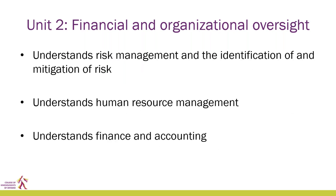Moving on to Unit 2 — financial and organizational oversight — council and committee members are expected to understand the concept of risk management and commit to identification and mitigation of organizational risk. They're expected to understand processes for managing people, understand finance and accounting, reporting concepts and terminology, how to interpret financial statements, and the role of council management and the auditor in financial reporting. They should be able to read, interpret, and question financial statements to make informed decisions and understand the financial planning process. Council members need to ensure that the college is governed within its budget allocation based on the principle of value for money and that appropriate controls are in place.